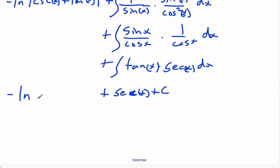So, the entire integral is equal to negative ln of cosecant x plus cot x plus secant x plus C.